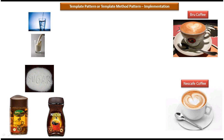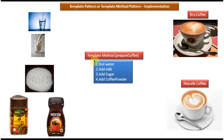So what I can do is write a template method called 'prepare coffee'. In that template method I can define the procedure and sequence to follow: step 1 is boil water, step 2 is add milk, step 3 is add sugar, step 4 is add coffee powder — which can be brew or Nescafe based on the coffee you want. Using this template method I can prepare any kind of coffee. Now we will see the class diagram and coding for this example.